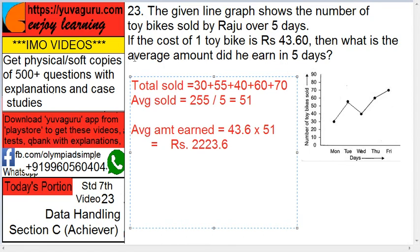First, find the total number of toy bikes sold. The daily sales are: 30, 55, 40, 60, and 70. Adding them gives 255. Average toy bikes sold equals 255 divided by 5 (the number of days), which equals 51.